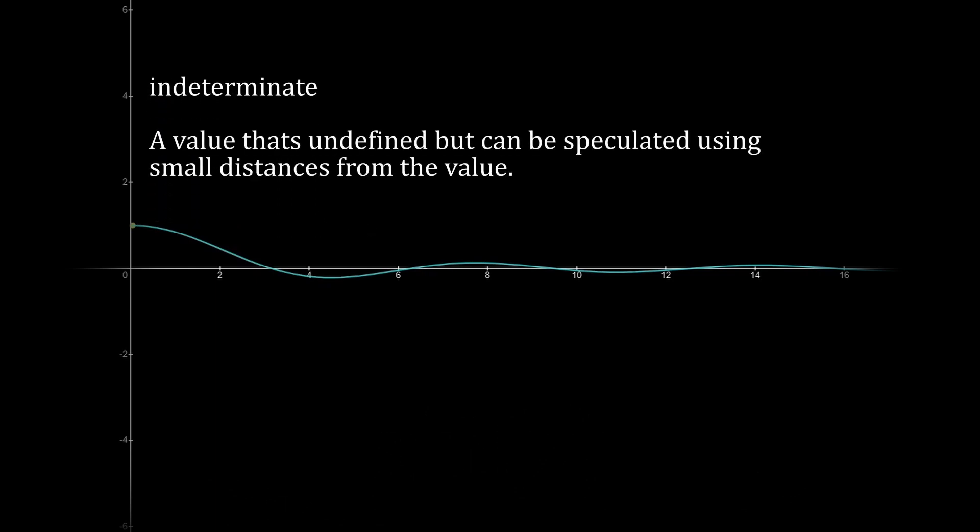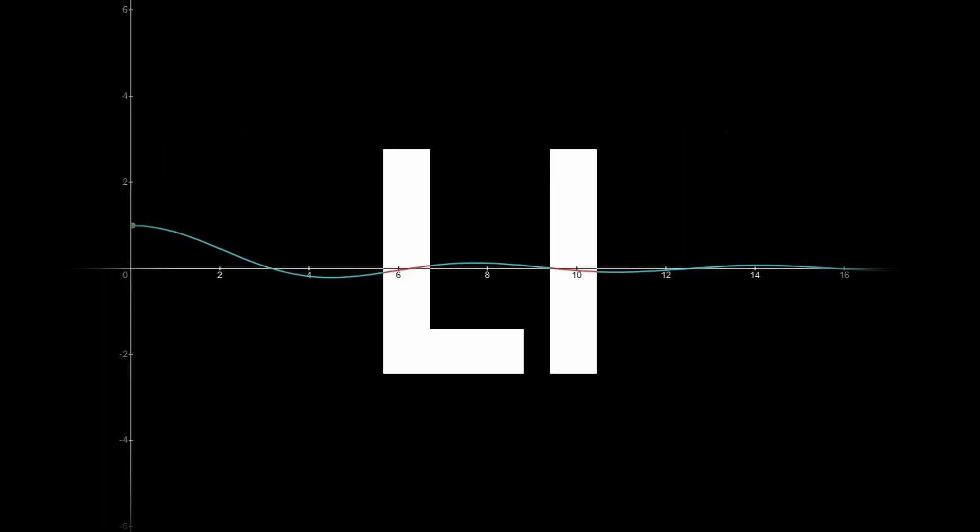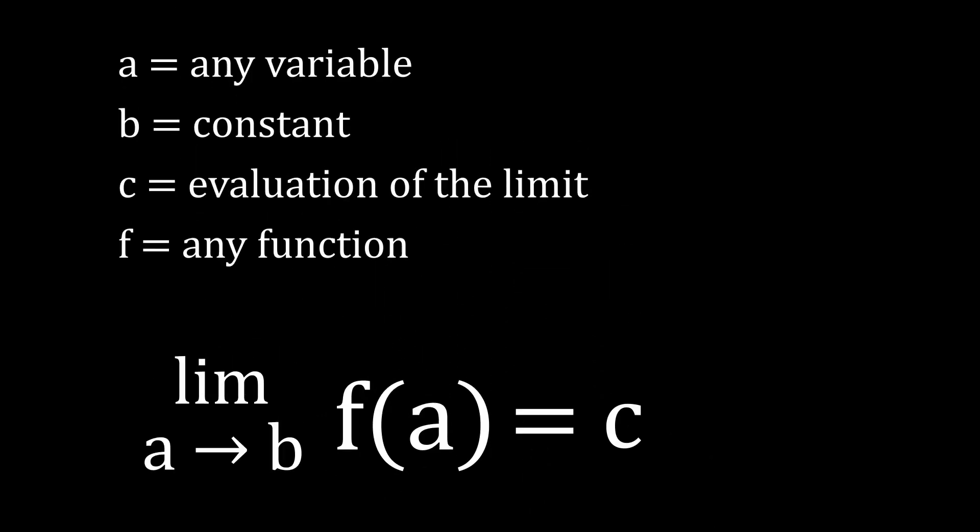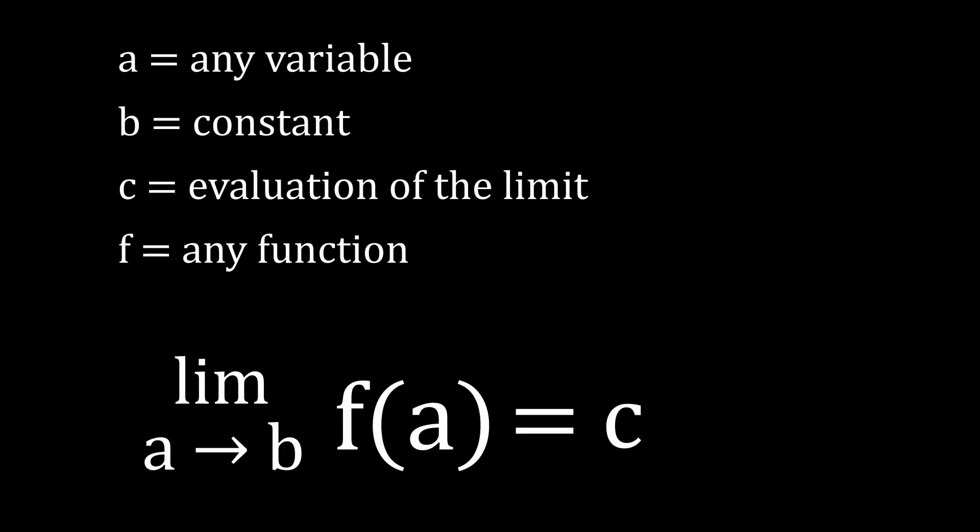Limits are notated with the three letters LIM, with a variable and an arrow pointing towards a value, the value being the thing it's approaching. We read this in English as the limit of function as a approaches b is equal to c.